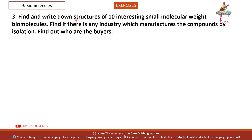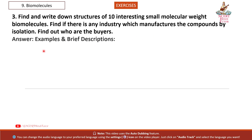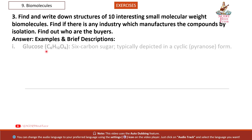Question 3: Find and write down structures of 10 interesting small molecular weight biomolecules. Find if there is any industry which manufactures the compounds by isolation. Find out who are the buyers. Answer — examples and brief descriptions. 1. Glucose (C6H12O6): 6-carbon sugar, typically depicted in a cyclic pyranose form.